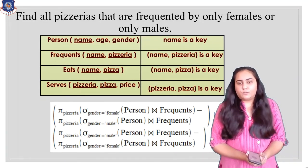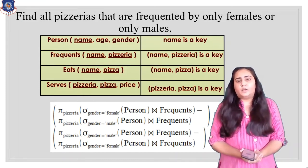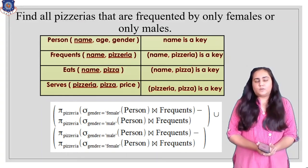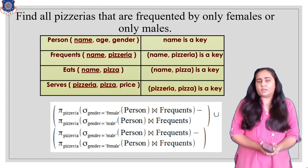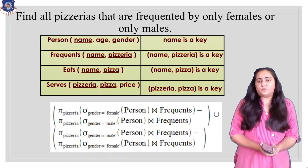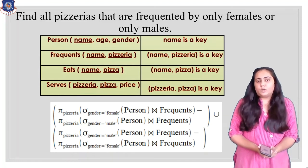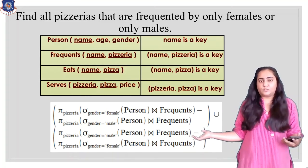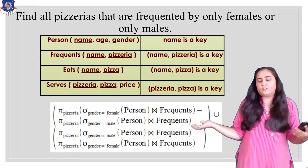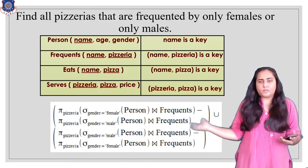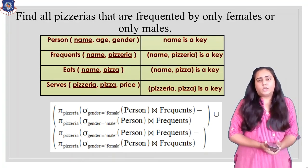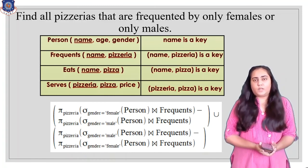This is how you can approach relational algebra questions in an exam no matter what the question is. First, figure out which tables are required, and once you've done that, decide which operations to apply. Remember there is more than one way of solving the same type of question, so your answer may be correct too. Feel free to write your query in the comments and I'll check it. That's it for this video — I'll see you in the next one. Thank you for watching.